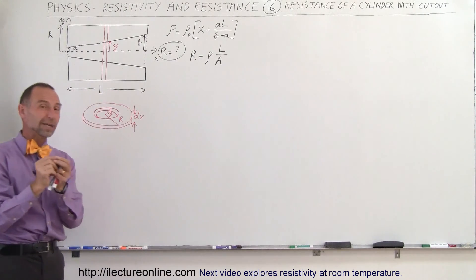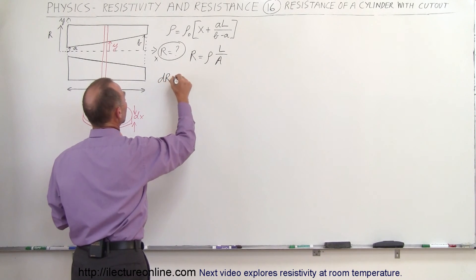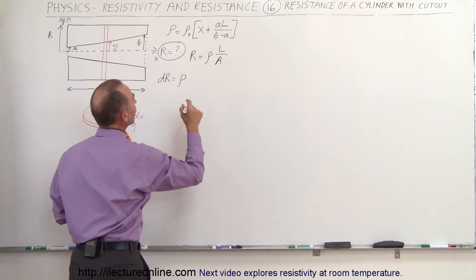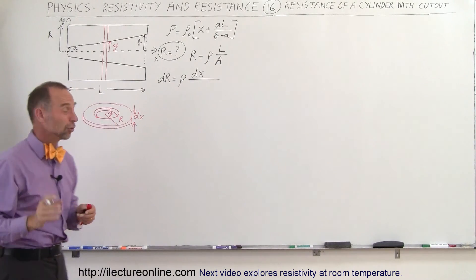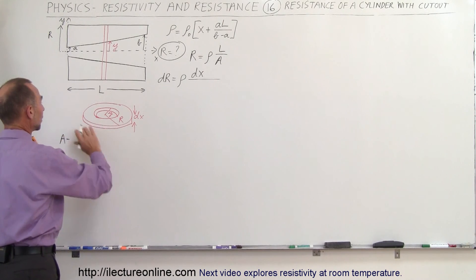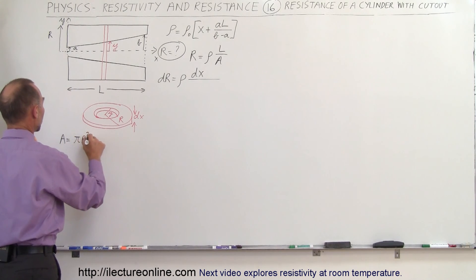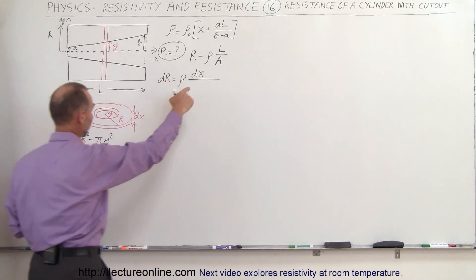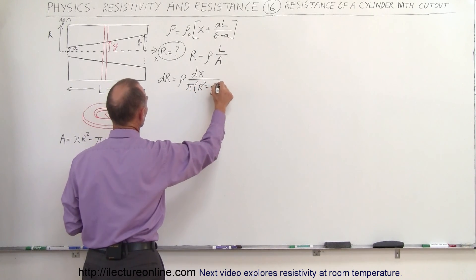To calculate the resistance of that little slice, we use the same equation: DR equals the resistivity times the length DX divided by the cross-sectional area. The cross-sectional area A equals the area of the outside radius pi R squared minus the inside radius pi Y squared, giving pi times the quantity R squared minus Y squared.